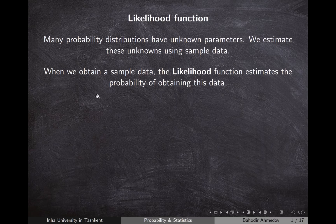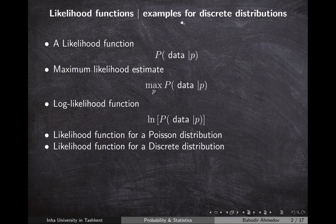Once we obtain the sample data, the likelihood function tells us what the probability would be of obtaining this data if we used different parameters. In this lecture we're going to discuss what the likelihood function is, the difference between the likelihood function and the probability mass function, and how to estimate the probability p which would make this likelihood function maximum.